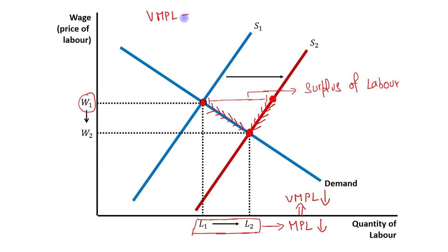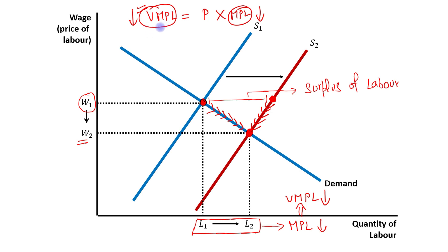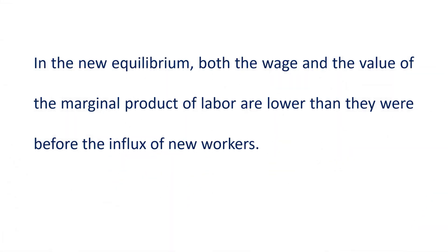Since the value of marginal product of labor equals price of output times MPL, if MPL is reduced, VMPL will be reduced. So the main point is, in the new equilibrium, both the wage rate as well as the value of marginal product of labor are lower. Comparing the new equilibrium to the initial equilibrium, both wage rate and value of marginal product of labor are lower than they were before the influx of new workers.